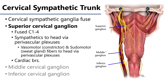Rather, what we see are up to three sympathetic ganglia, which represent the fusion of different levels of spinal ganglia. With the cervical sympathetic trunk, there are typically three ganglia: an inferior ganglion, a middle ganglion, and a superior ganglion.